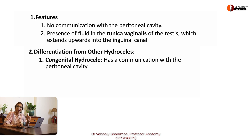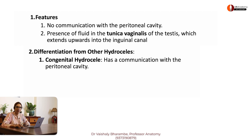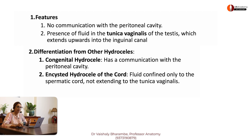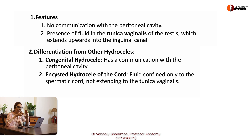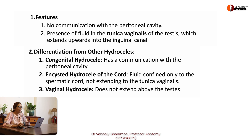How will you differentiate infantile hydrocele from others? If it's a congenital hydrocele, it would have communication with the peritoneal cavity — so it's not congenital; it has no communication. If it's an encysted hydrocele, encysted hydrocele is in the spermatic cord — you can palpate the testes separately, and the fluid is confined only to the spermatic cord. Why is it not a vaginal hydrocele? Because vaginal hydrocele stops at the level of the testes — it doesn't go ahead into the inguinal canal.